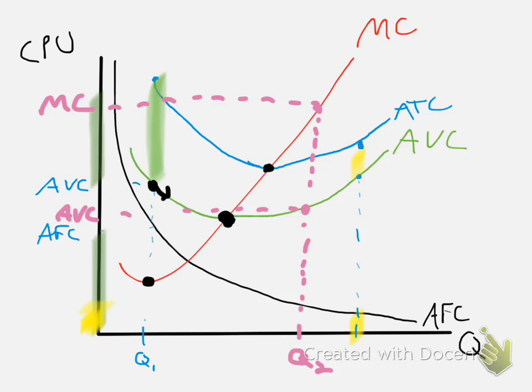So that is all the cost curves and how they interact with each other. We will use these again later on when we talk about firms and what kind of profits they're making and what output decisions they want. So until next time, see ya.